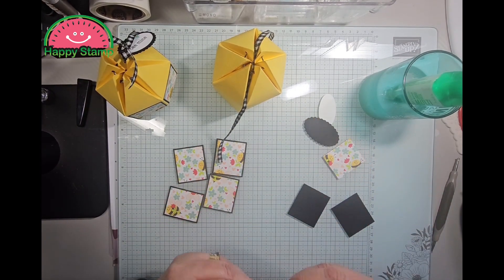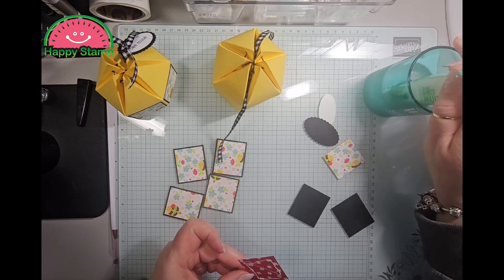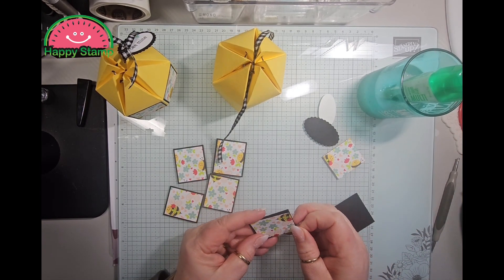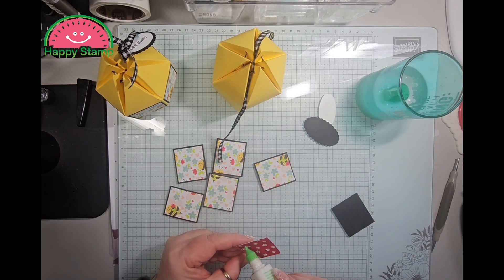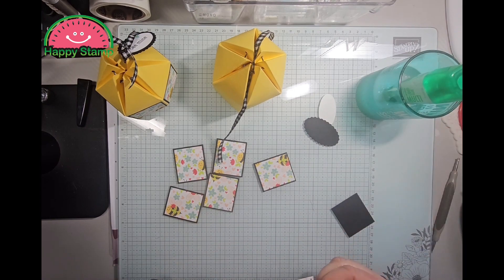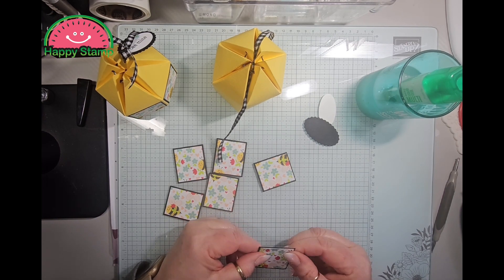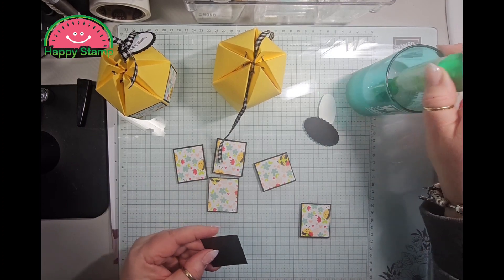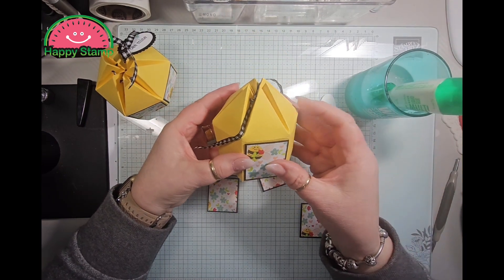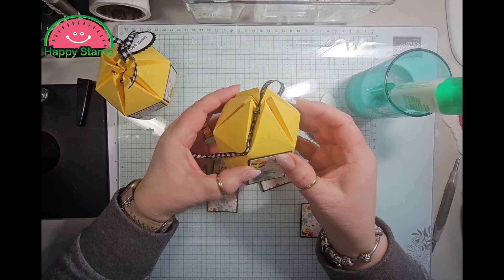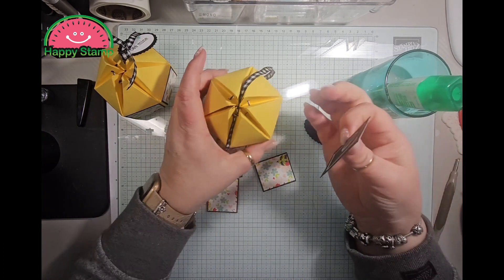This is the Be My Valentine designer series or Be Mine designer series paper. Sorry, I think I keep getting out of frame. I have to remember to sit up straighter. All right, now I'll take these and that's going to go on these little squares right down here. So it would have been a little easier to put them on before you assemble the box, FYI.